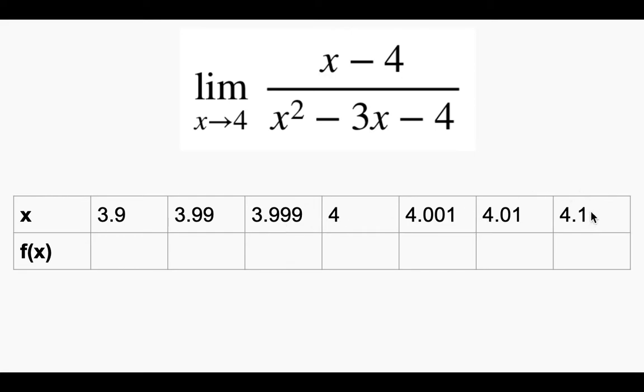And from the right, 4.1 is close to 4, but this is really close to 4. This is approaching from the right, from values above 4. What they're asking us to do is evaluate this function at each of these x values.